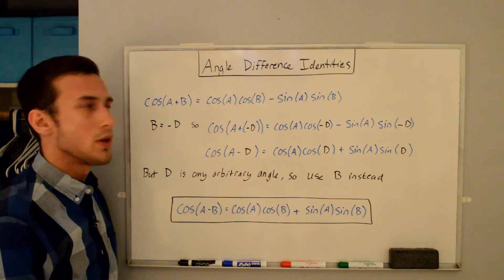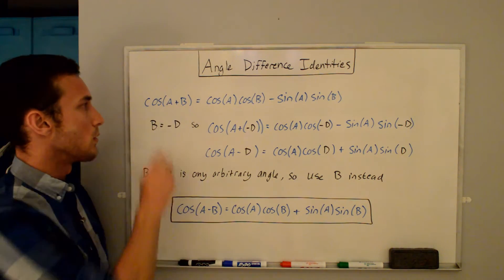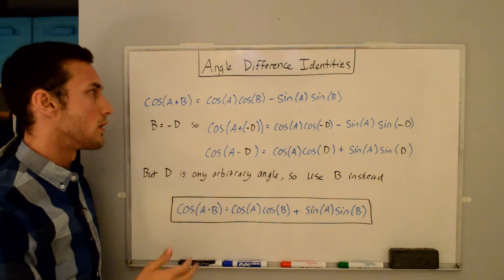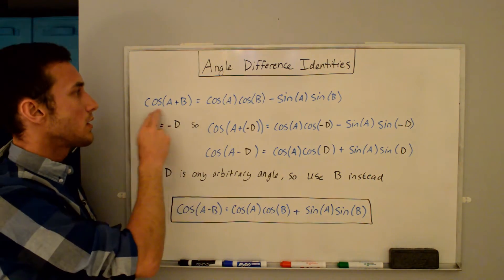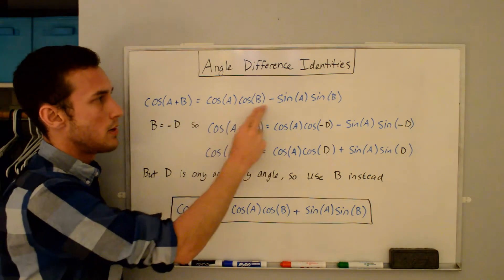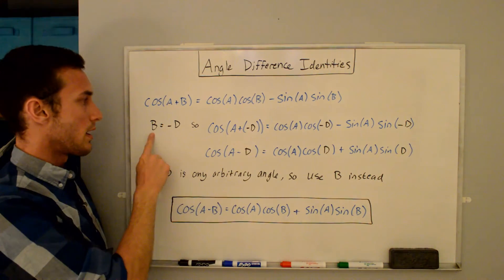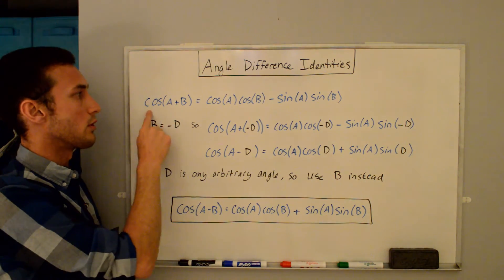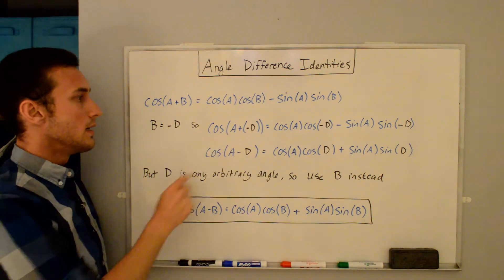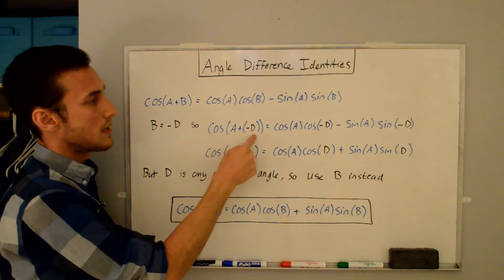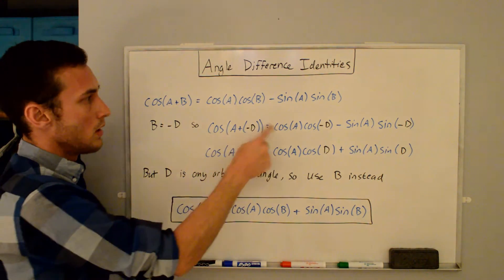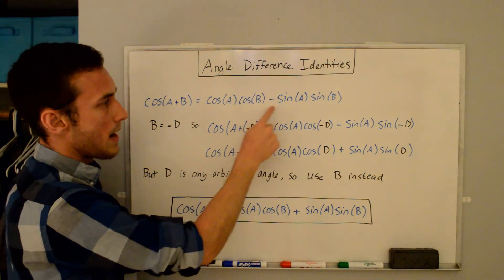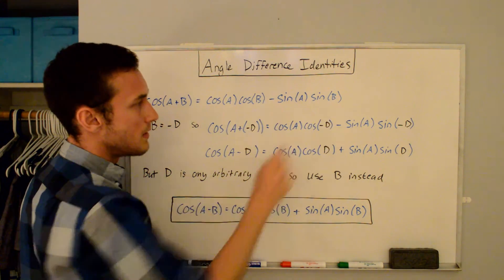Now let's do the cosine angle difference. The angle sum identity for cosine from the previous video is: cosine of a plus b equals cosine a cosine b minus sine a sine b. We plug in b equal to negative d again, because we're looking for cosine of a minus b. So we get: cosine of a plus negative d equals cosine a cosine of negative d minus sine a sine of negative d.